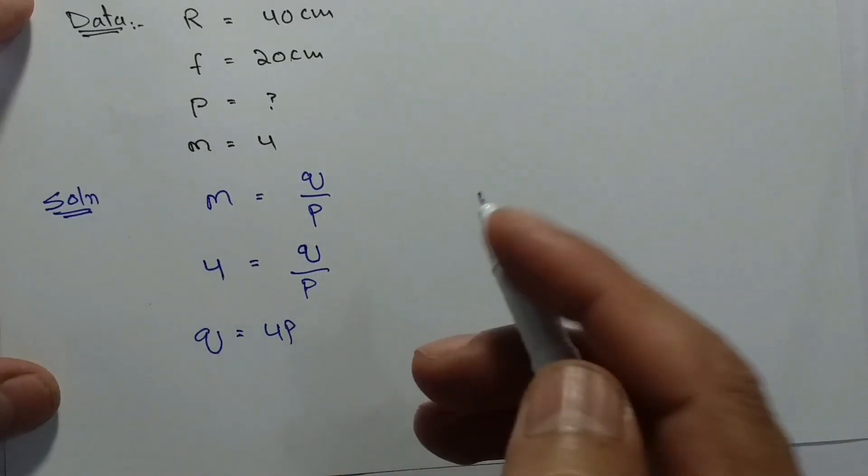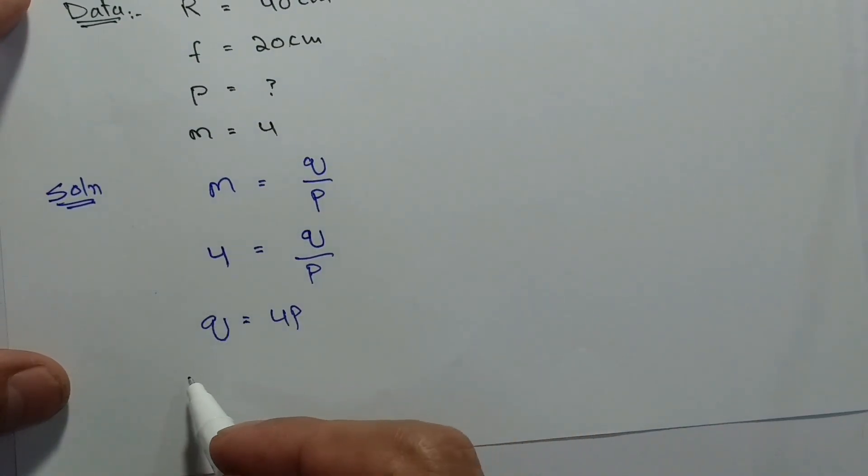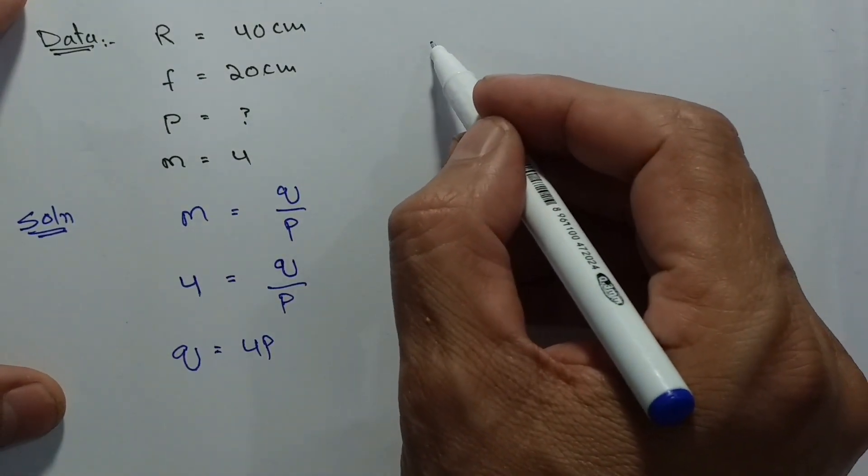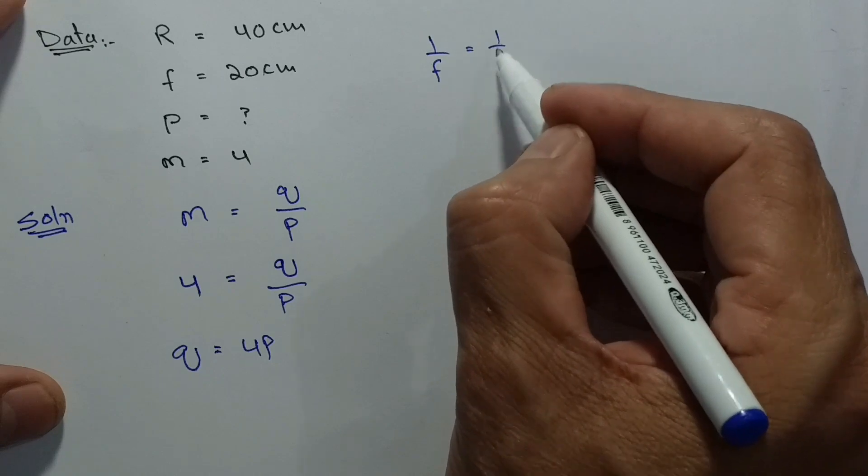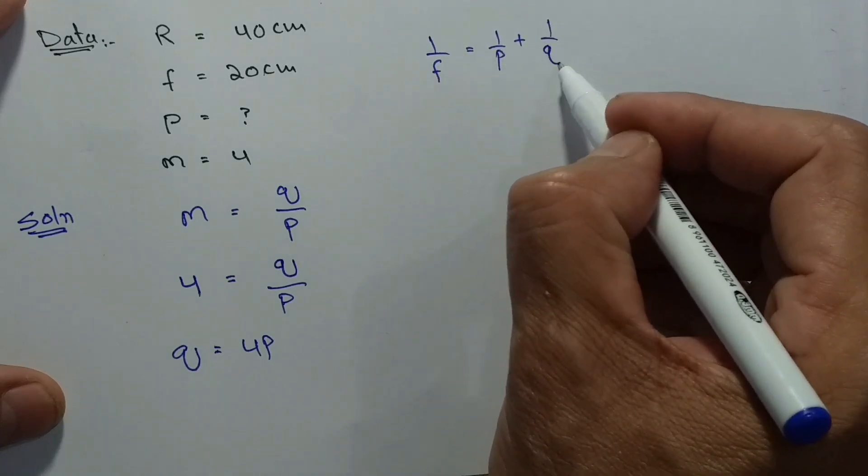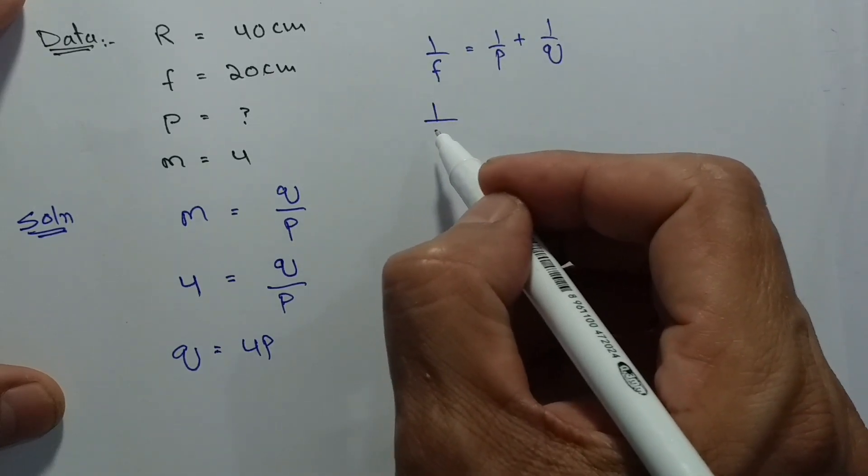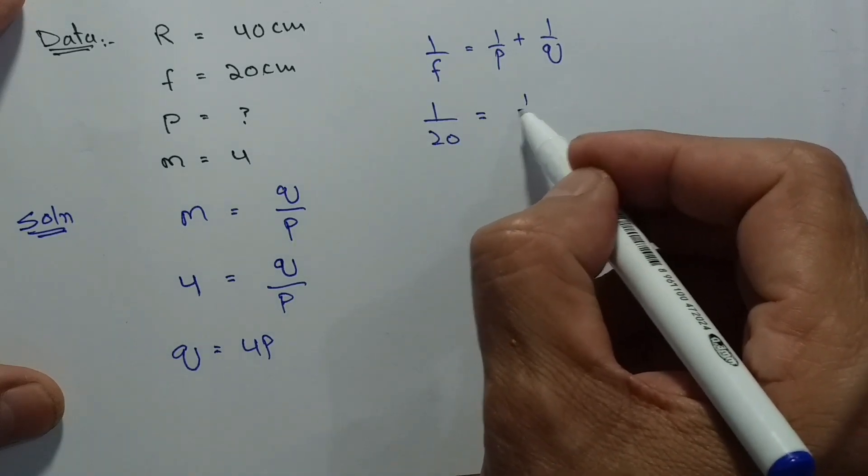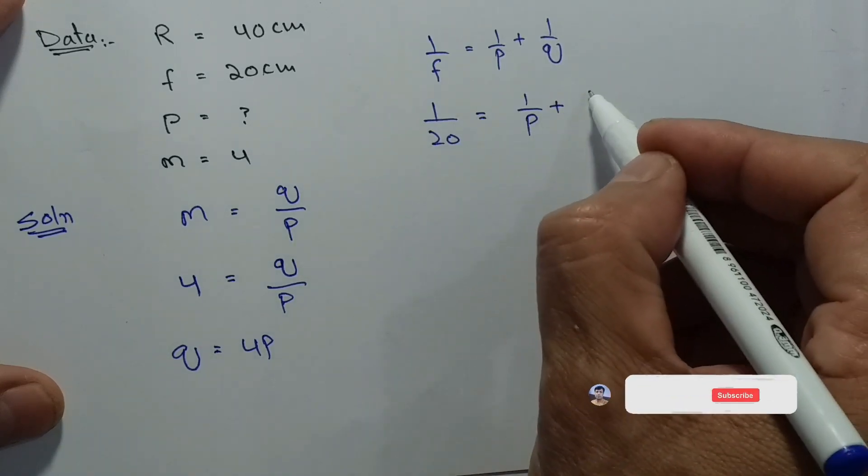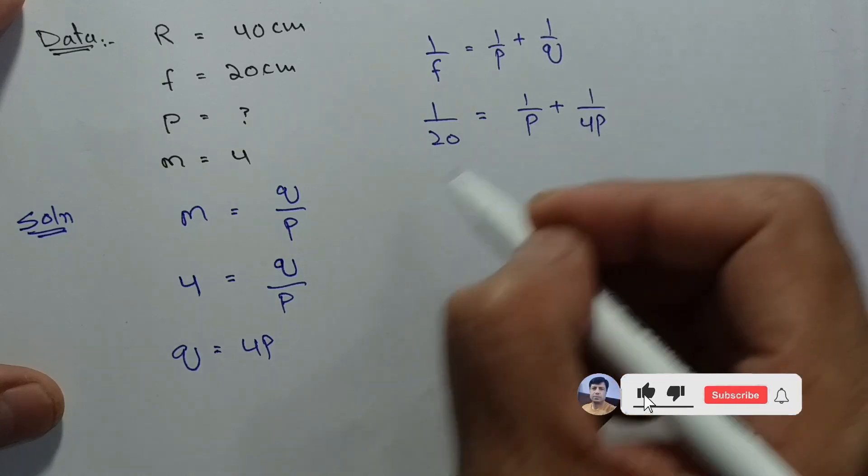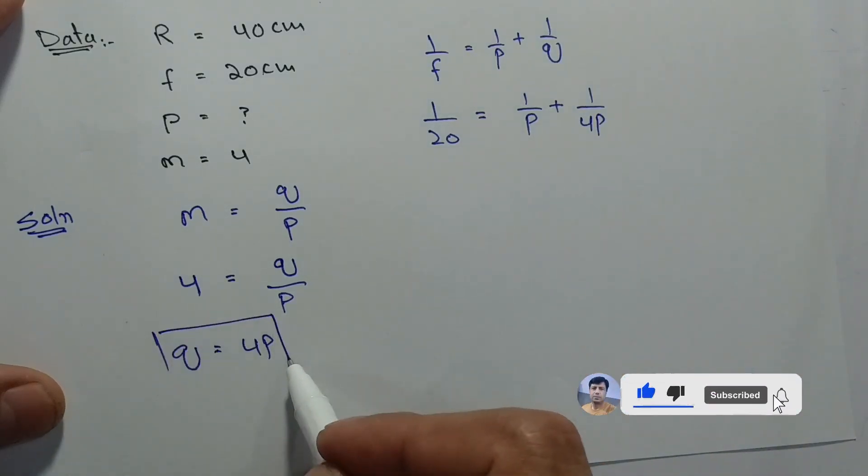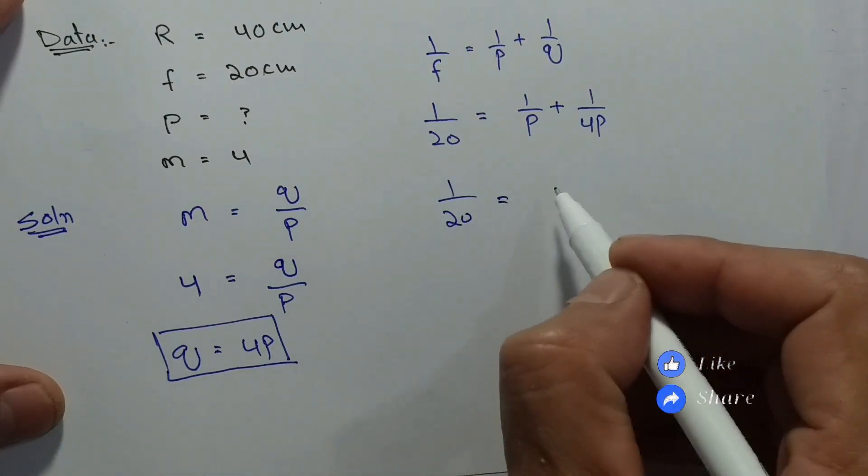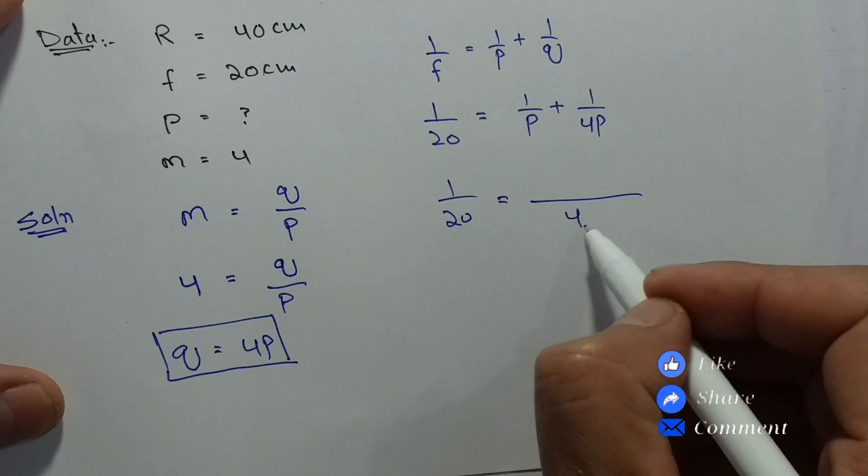We will use the mirror formula: one upon f equals one upon p plus one upon q.